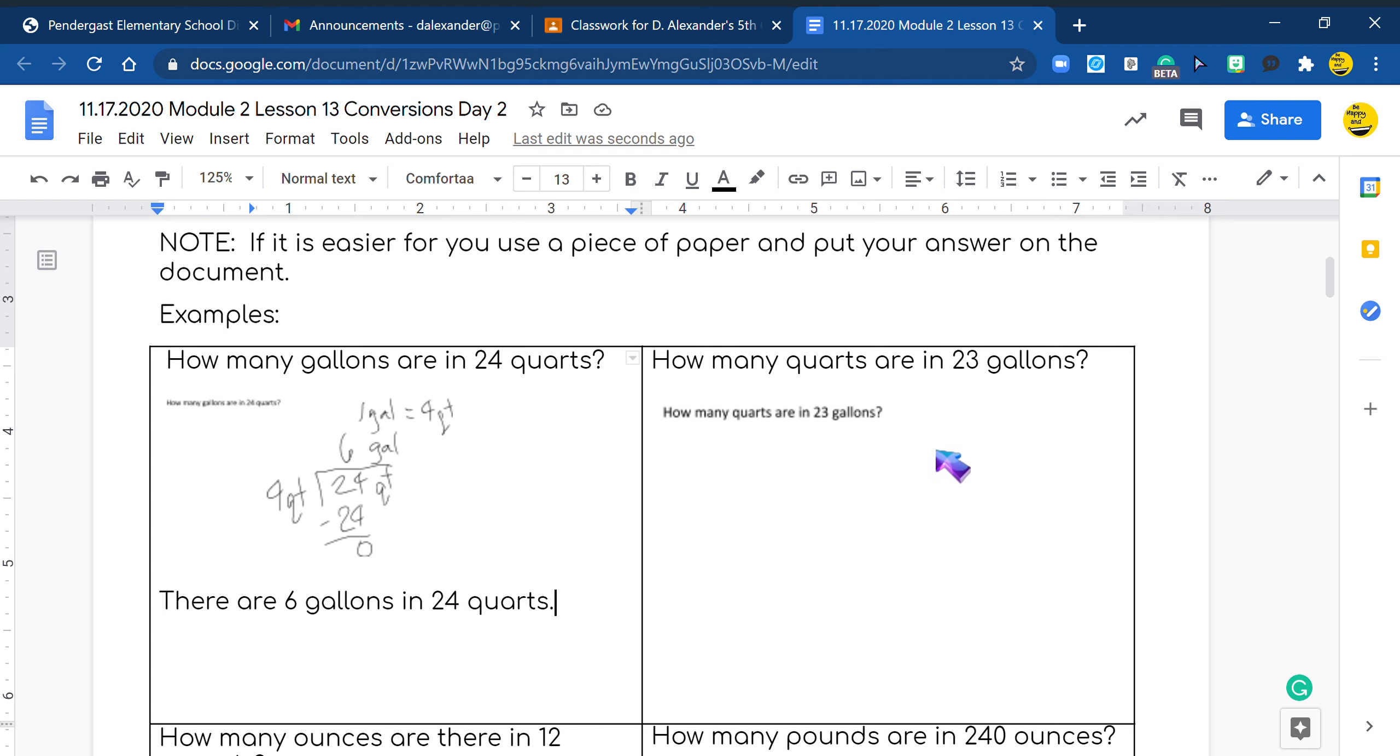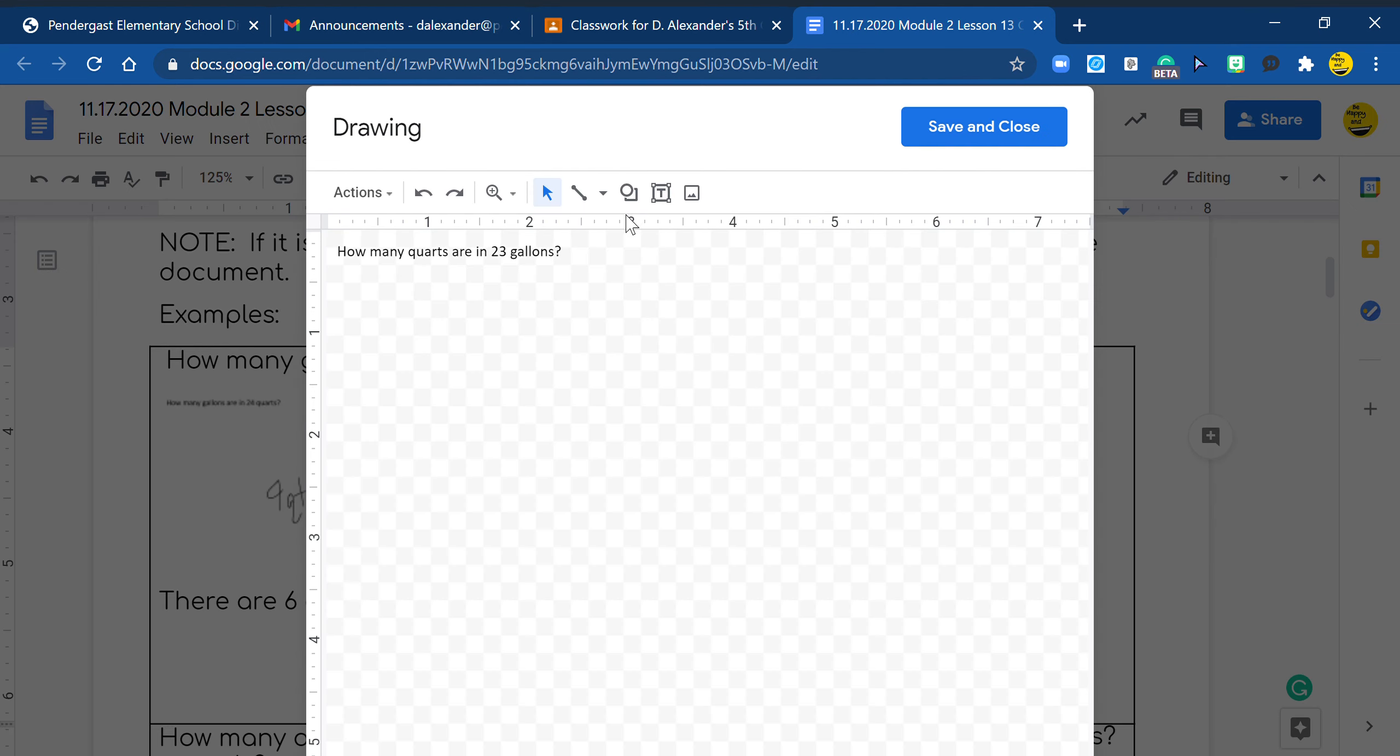Now when I see your answer I know exactly what the question was asking. So now we're going to go the next one. How many quarts are in 23 gallons? So now I'm going to click in and again I'm going to my scribble tool. And as usual with my finger, I'm going to do four quarts equals one gallon. I always write what the original thing is so that I remember, it's just something that works for me.